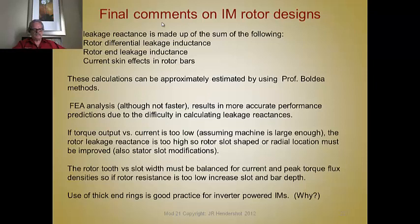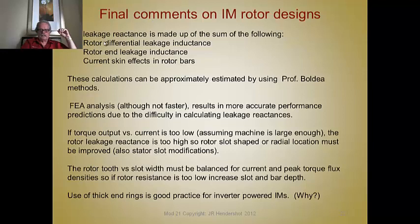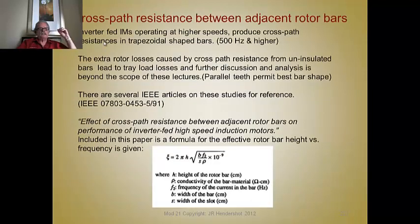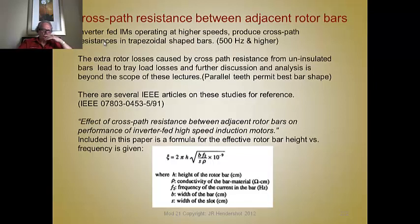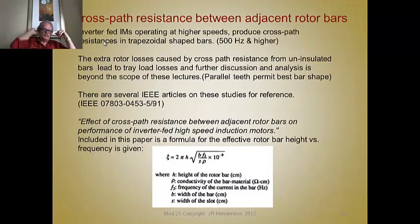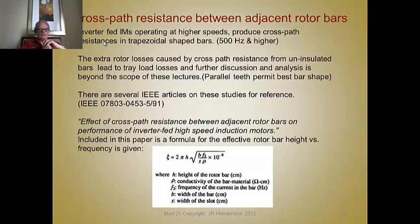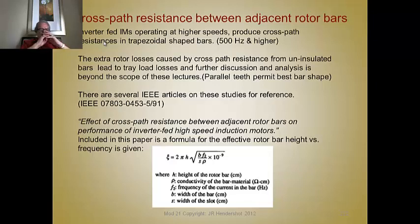If the rotor resistance is too low, increase the slot and bar width. Using thick end rings is good practice for inverter-powered induction motors. There is a phenomenon that exists in rotors at higher frequencies: a cross-path resistance that develops in inverter-fed machines operating at higher speeds in trapezoidal-shaped bars — which are the bars we want to use anyway. This is probably a problem at 500 Hz and higher. These extra rotor losses are caused by cross-path resistances because the bars are uninsulated from the core — and there's really no way to insulate them — leading to stray load losses. Further discussion of this is beyond the scope of these lectures.